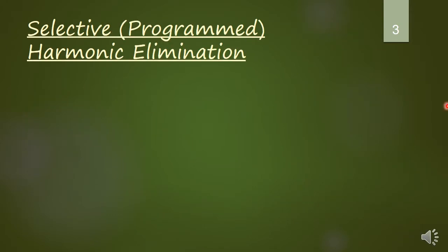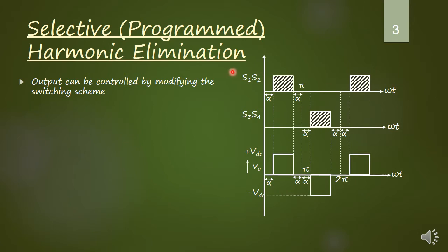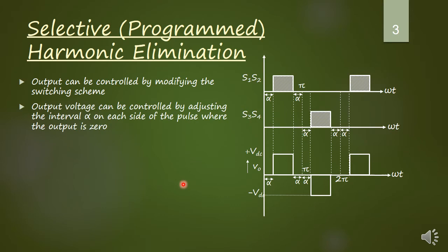The output voltage can be controlled by modifying the switching scheme. Looking at the switching pulse waveform for S1 and S2, it is delayed by an angle alpha. That is, instead of turning them on at 0 degrees, the switches S1 and S2 are turned on after alpha degrees. Similarly, they are turned off not at π, but alpha degrees before π. The same modification is applied for S3 and S4 — instead of turning them on at π, the switches are turned on after a delay of alpha degrees from π, and they are turned off earlier by alpha from 2π. Using this switching scheme, this will be reflected in the output voltage waveform.